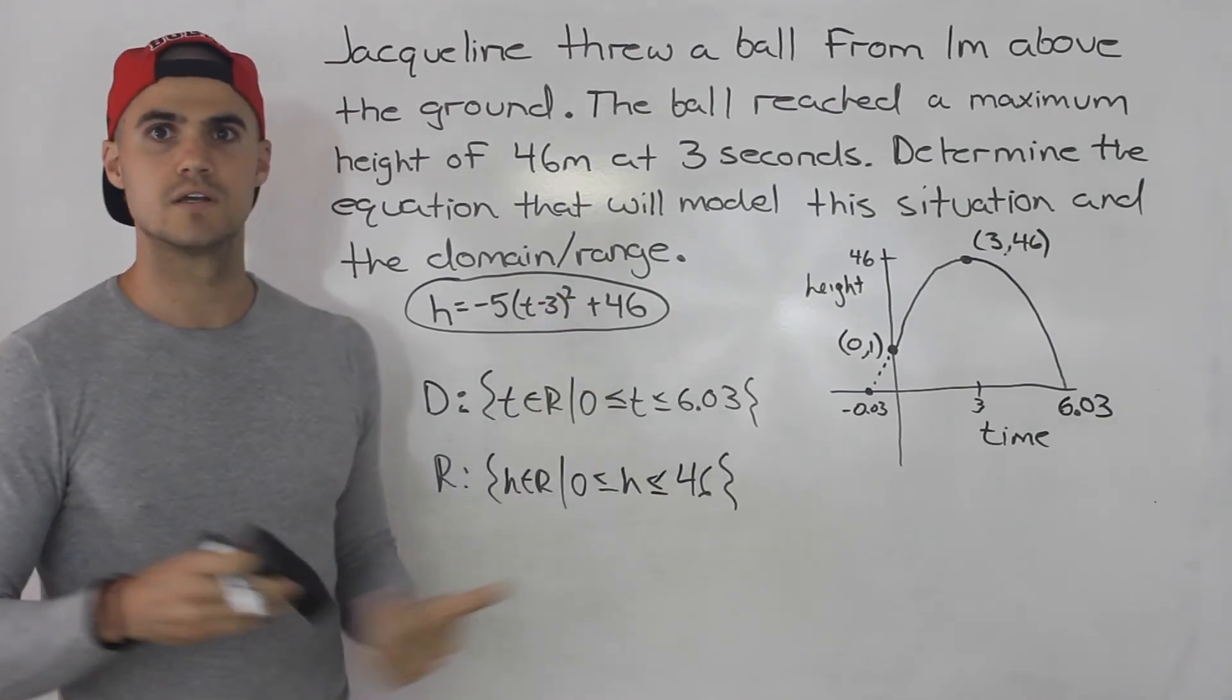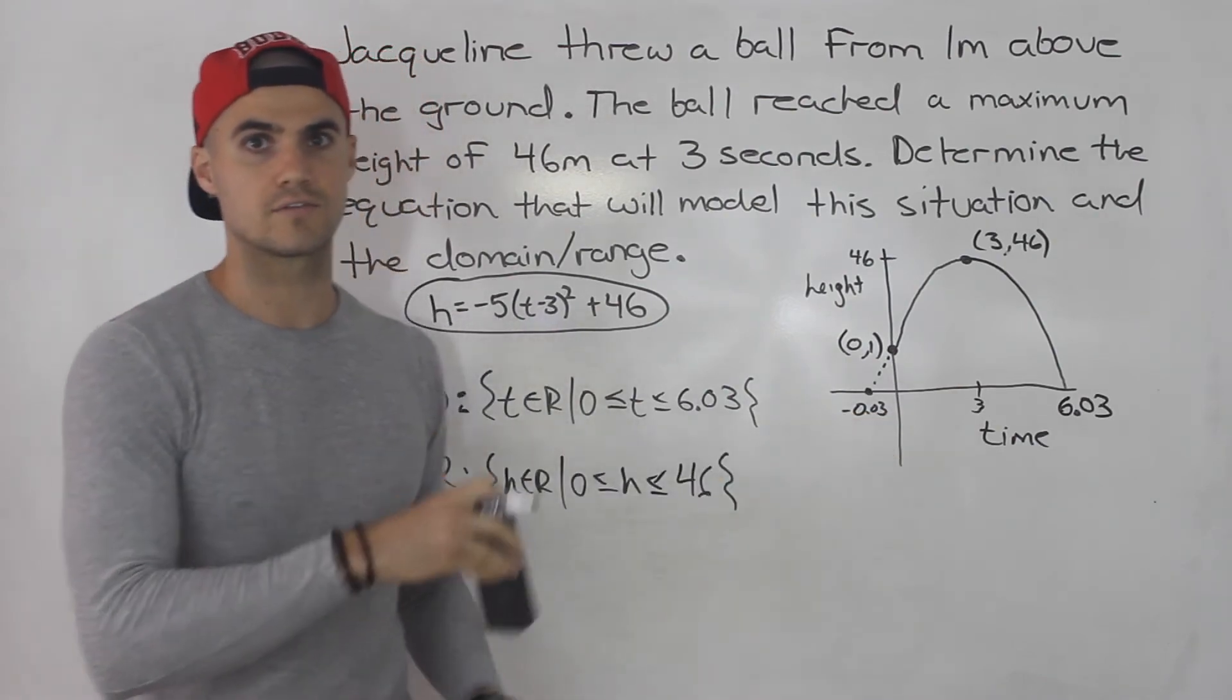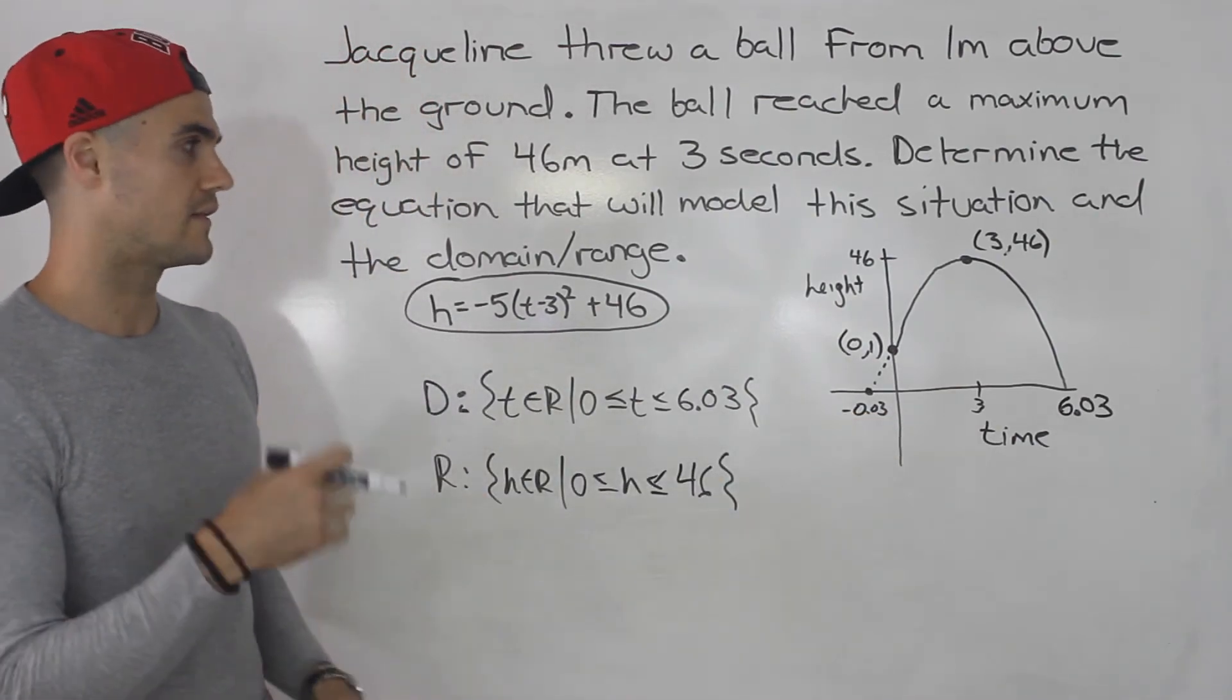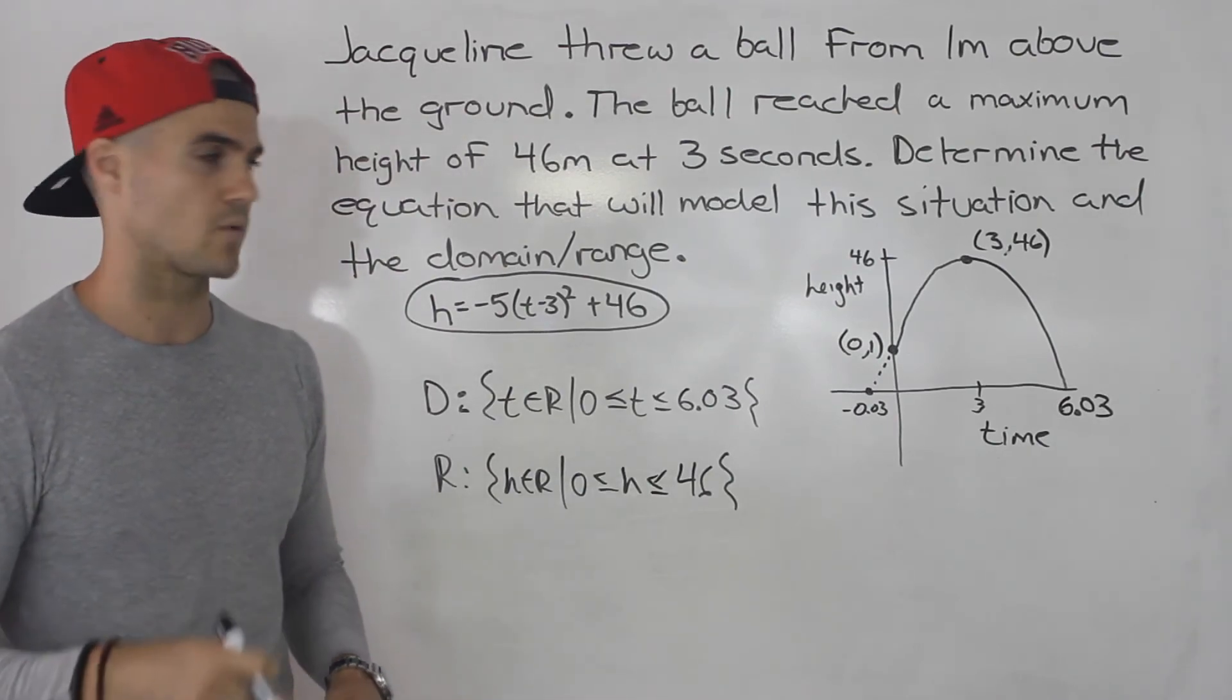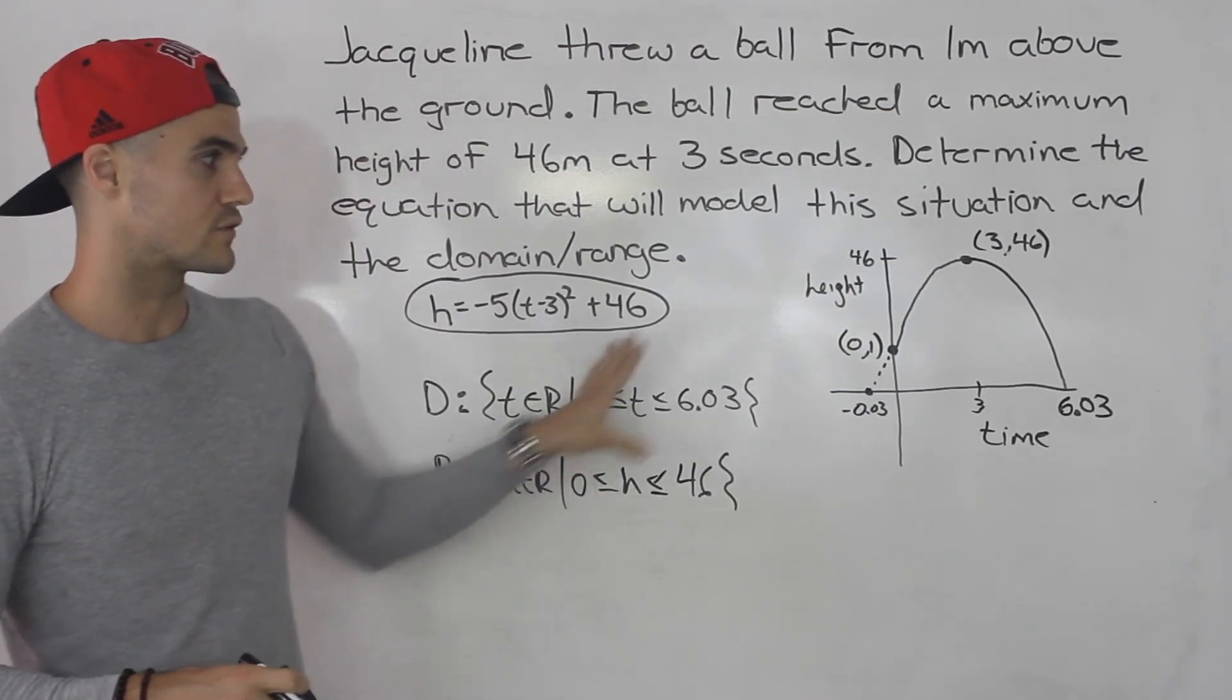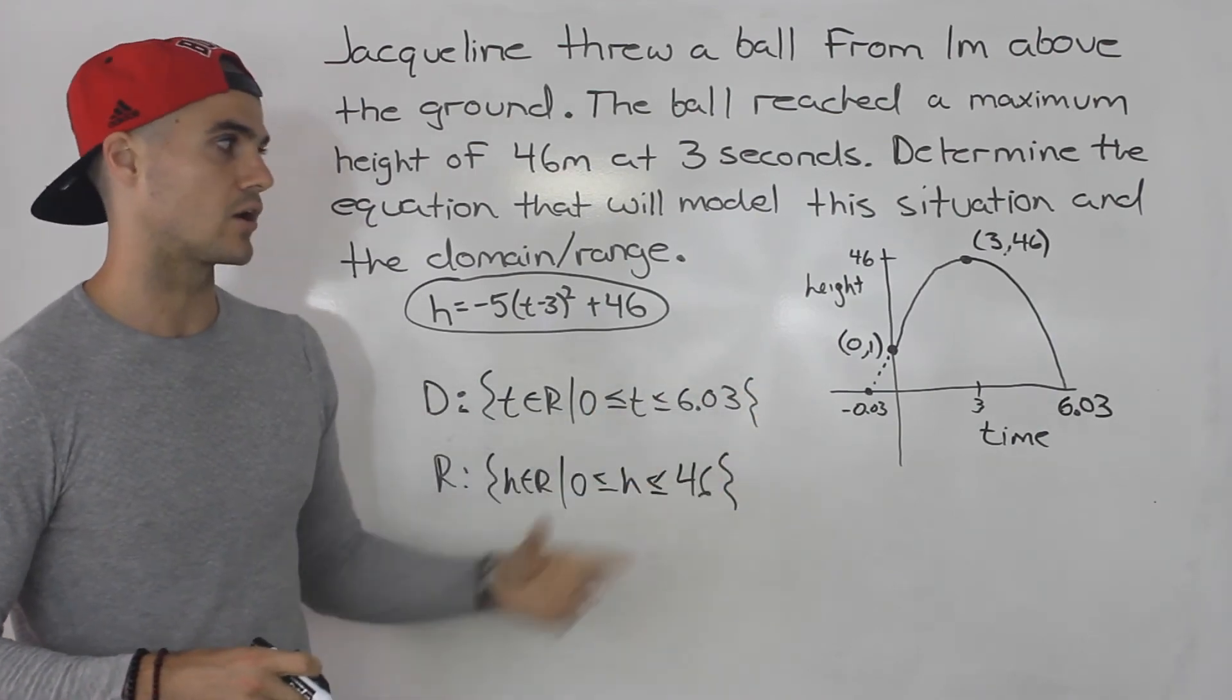Now you're not always going to have to put in vertex form. Sometimes maybe they'll give you the two intercepts, so you'll have to put it into factored form. Then they'll give you another point. You'll have to solve for the a value. We've done tons of questions where they give you different types of things and you have to make an equation depending on what they give you.